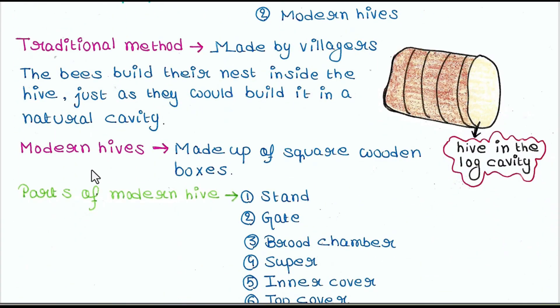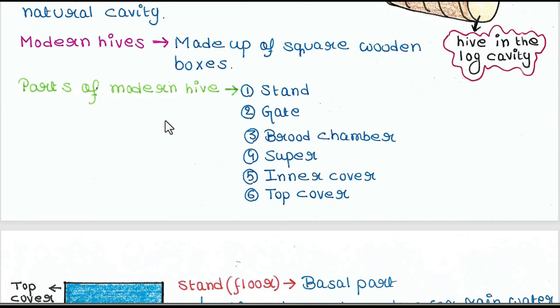Next is the modern hive. This is made up of square wooden boxes. The parts of the modern hive are: stand, gate, brood chamber, super, inner cover, and top cover.